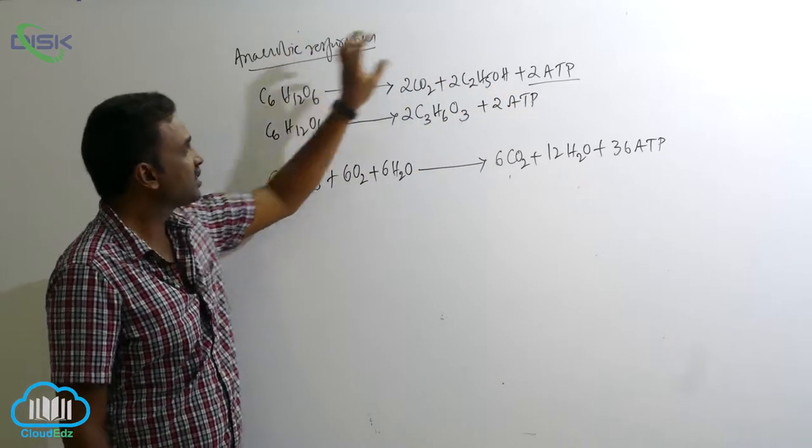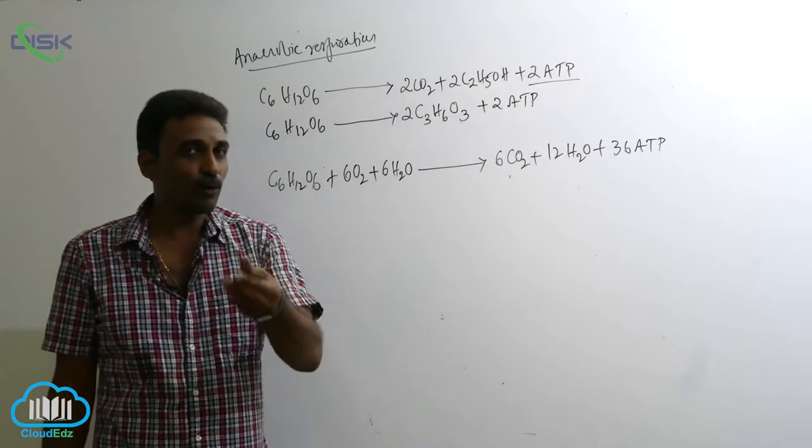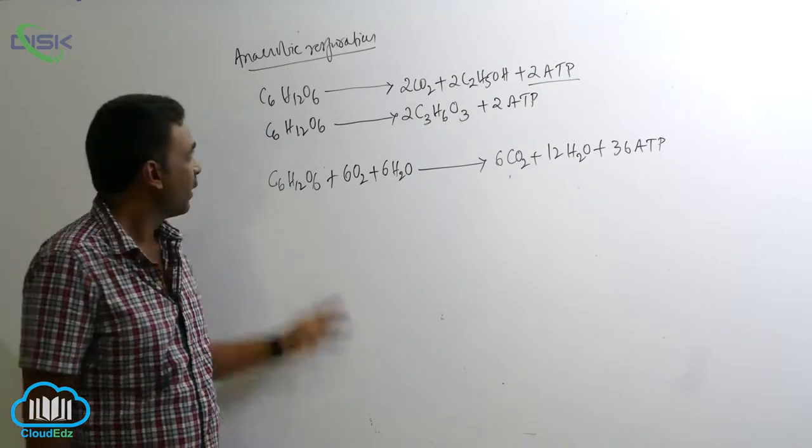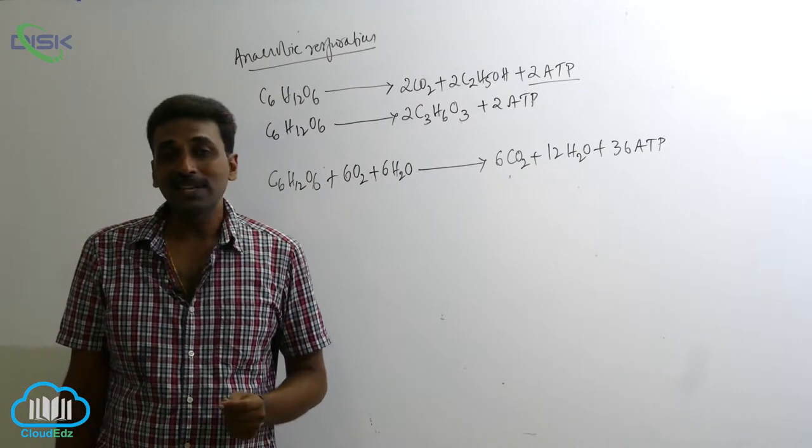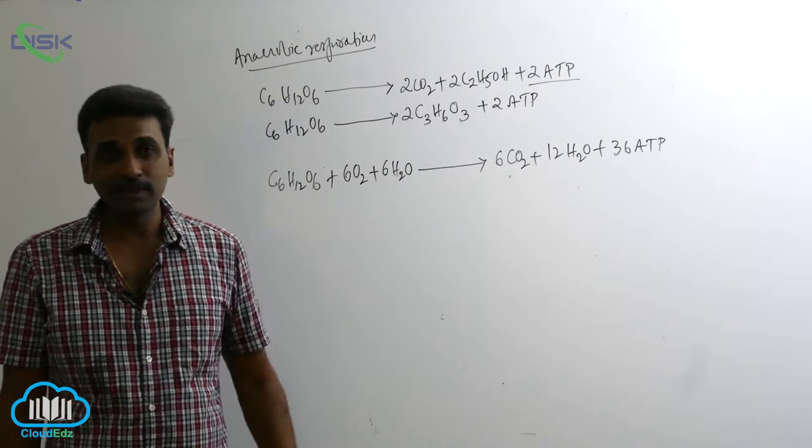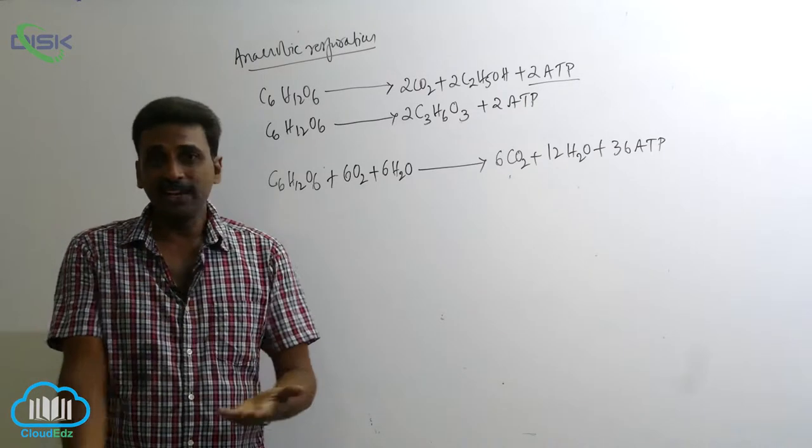So this glucose is broken down to produce ethanol, and a small quantity of energy is produced. But anaerobic respiration is also seen in some of our cells, for example, the skeletal muscle cells.